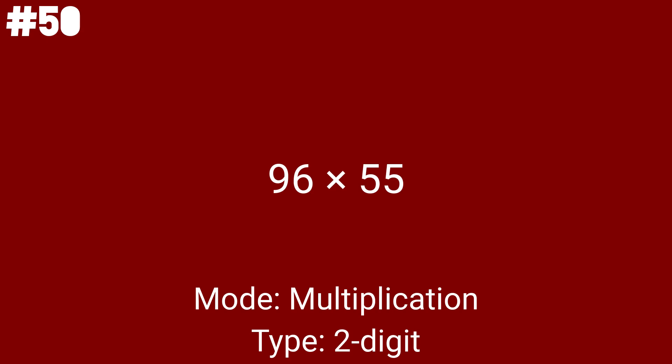The sixth problem is 96 times 55, and this is the first double-digit multiplication problem. Also, 2 digits are more complicated than 1 in this case. This one is 40 times 70, the seventh multiplication problem. By the way, both numbers end in zeros, so this one should be easier to compute.